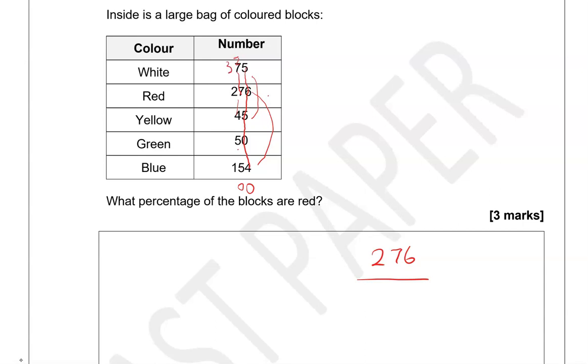Now here in the hundreds, we've got only 2 and 1. So that is 3, and the 3 we carried over, that is 6. So 276 out of 600.